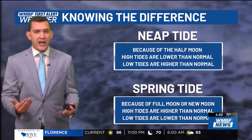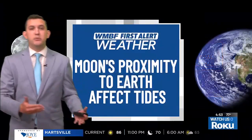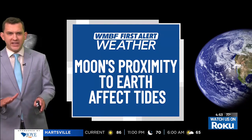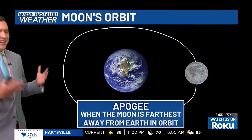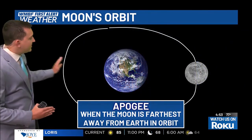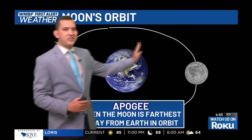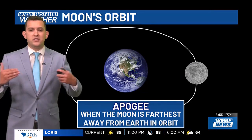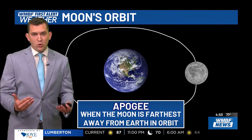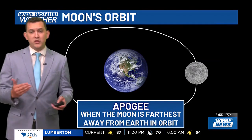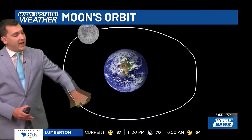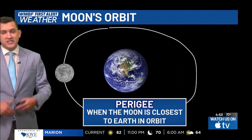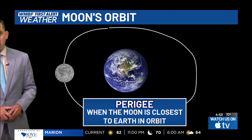There are other factors that can affect tidal heights, such as the moon's proximity to Earth. Looking at the moon's orbit, it's not a perfect circle — one side is a little bit closer and another side is a little bit further. We call the farthest point apogee, when the moon is farthest away from Earth in its orbit, and this brings lower than normal high tides. As the moon orbits closer to Earth, we call this perigee — when the moon is closest to Earth in orbit, which brings higher than normal tides.